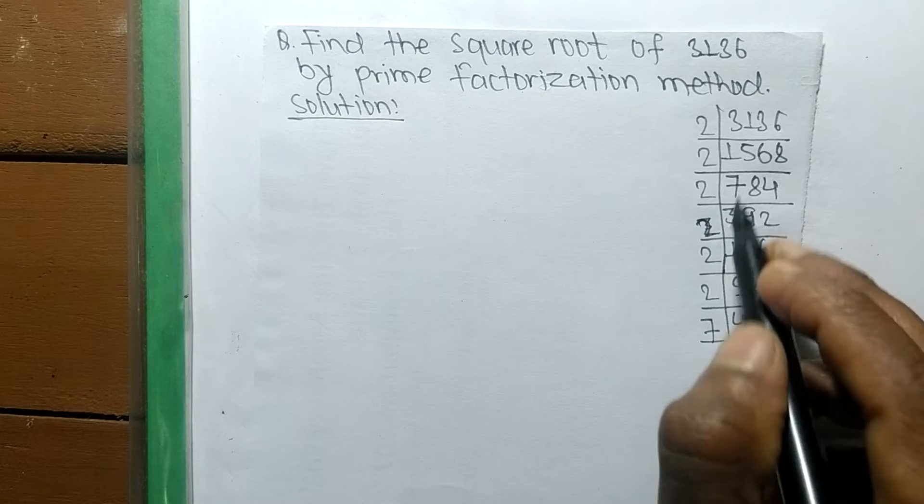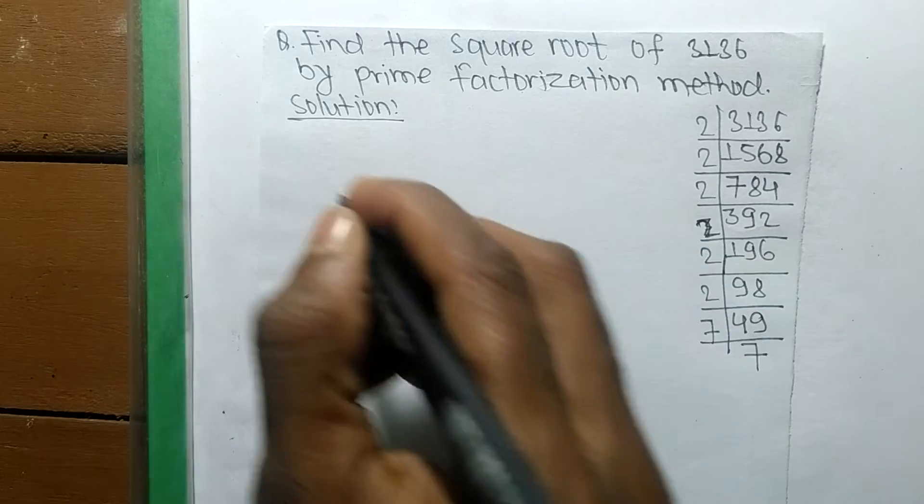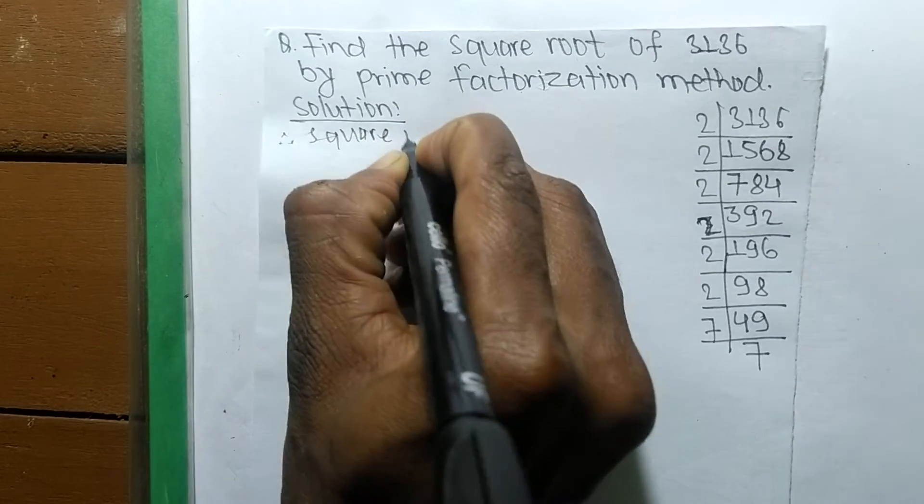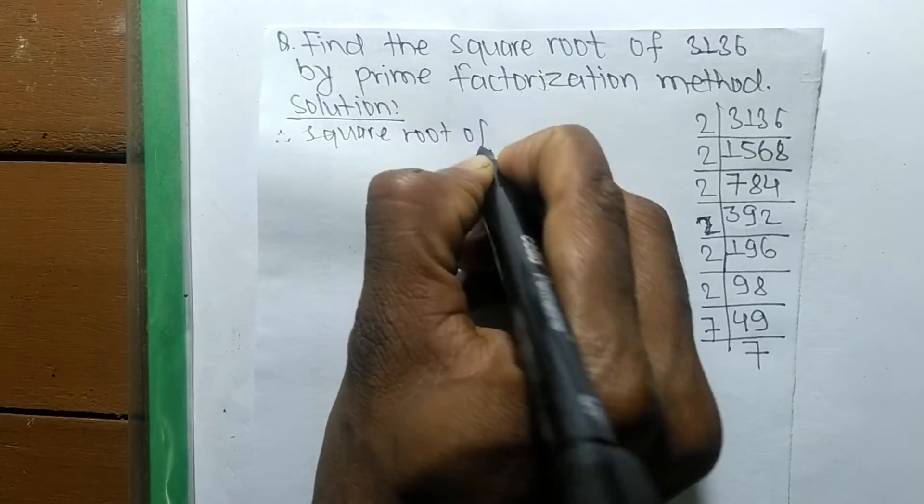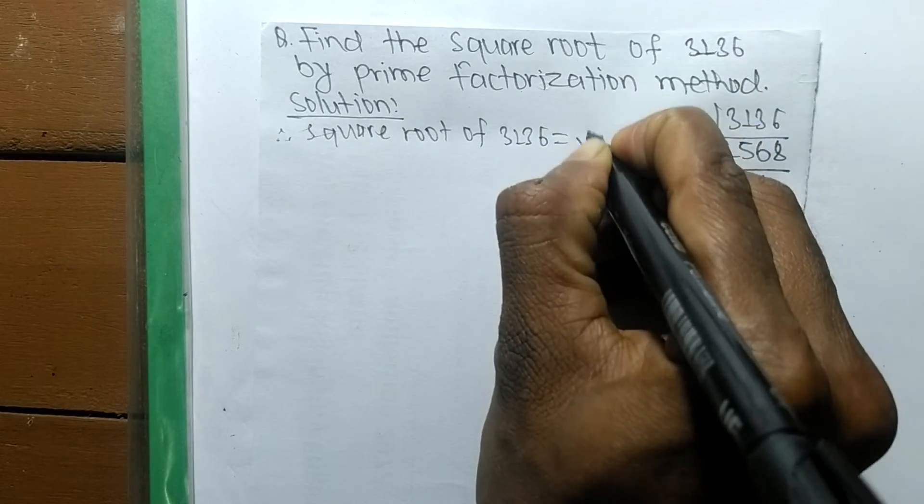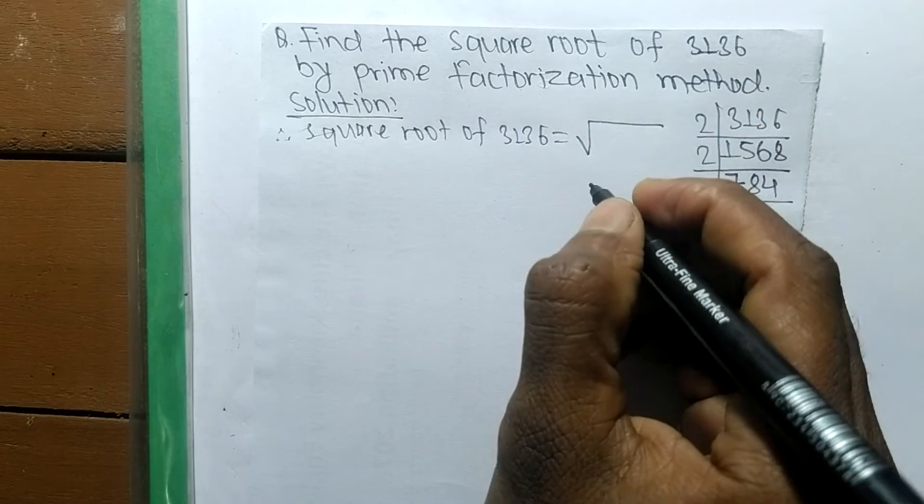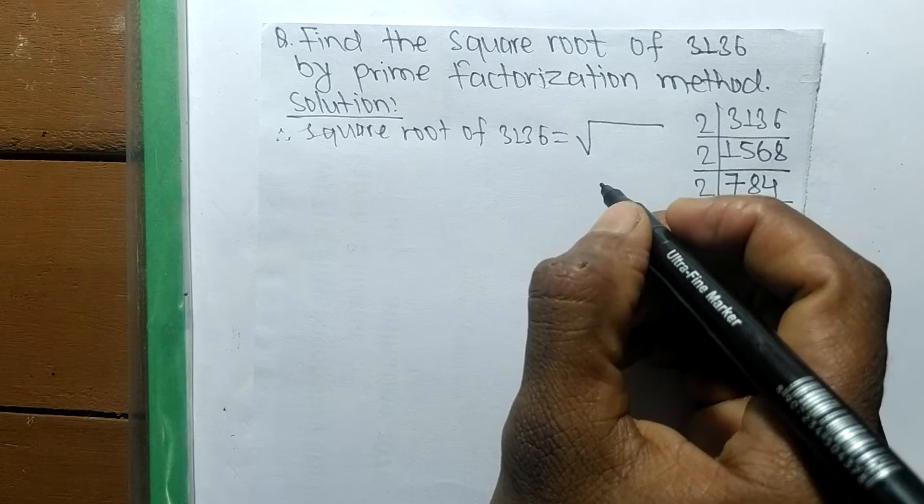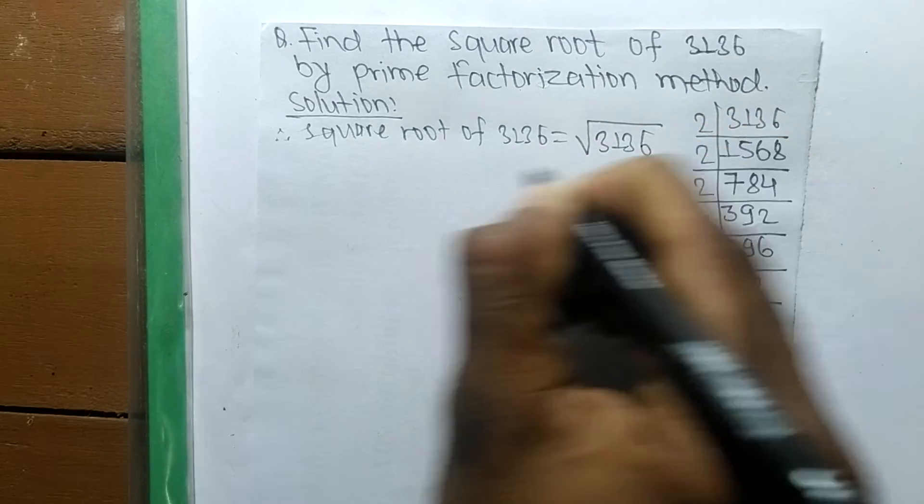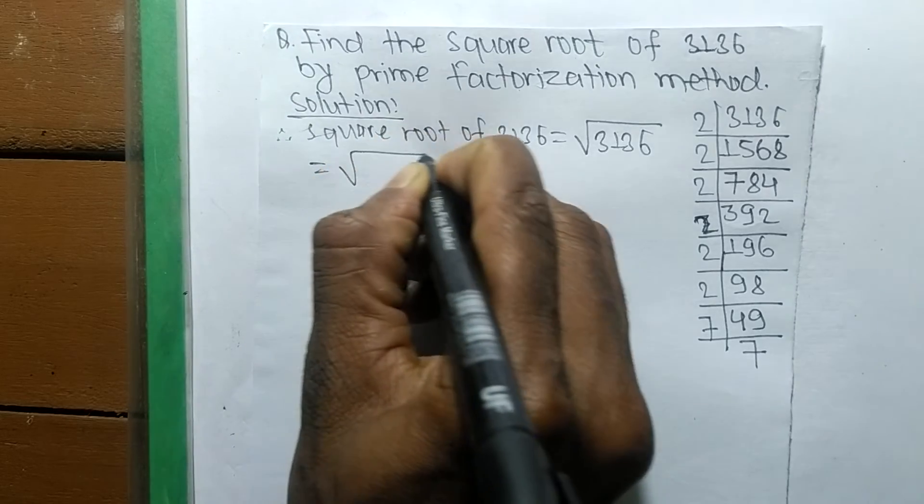Now we shall find the square root. Square root of 3136 is equal to - this sign is the sign of a square root and we are finding the square root of 3136.